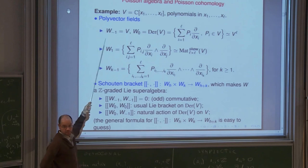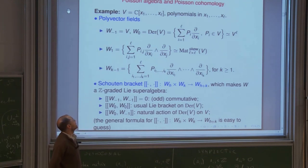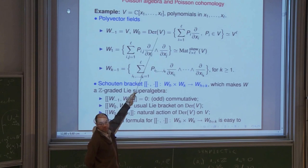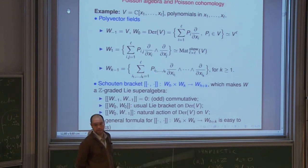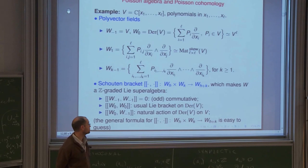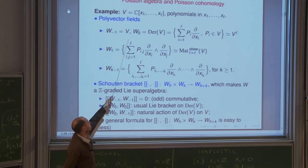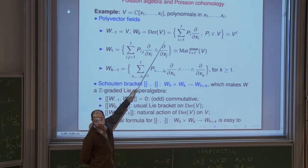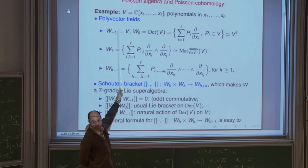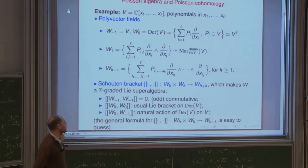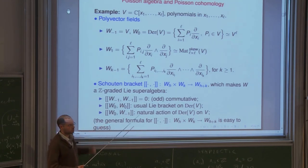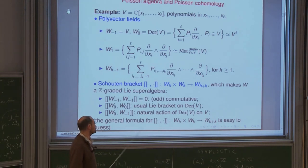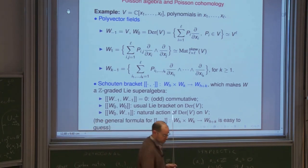W^{-1} will be a commutative super algebra — since it is odd, it is anti-commutative. On W^0, which is the algebra of derivations, there is already a Lie algebra structure given by the commutator, so we put the usual Lie bracket. The super-commutator between W^0 and W^{-1} is given by the natural action of the algebra of derivations on V. This Lie bracket extends naturally to the whole space of polyvector fields, giving a Lie super-algebra.